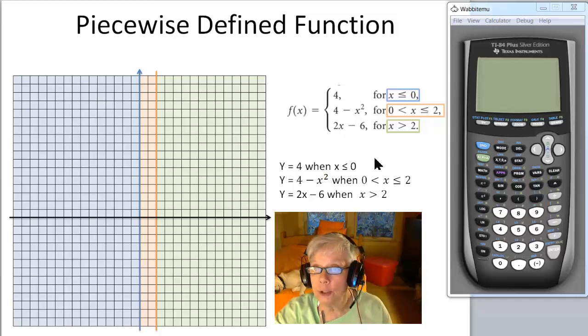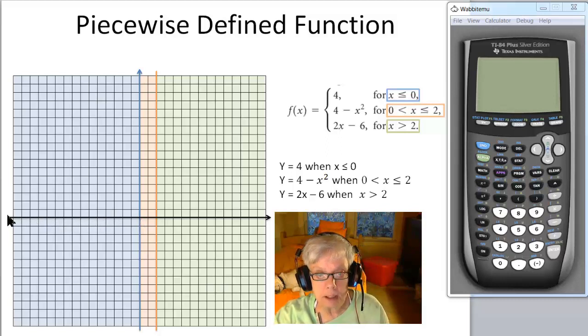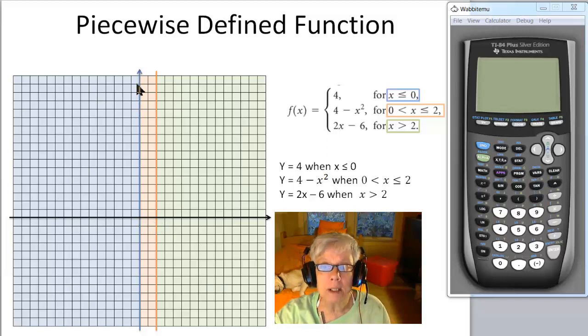So what this strange looking thing really means is that when x is equal to or less than 0, that is when you're on the y-axis right there or to the left, this is where x equals 0, which is why I made the y-axis blue because it's going with this part of the domain. When x is equal to or less than 0 or to the left of 0 and including 0, then you're going to graph the line y equals 4.